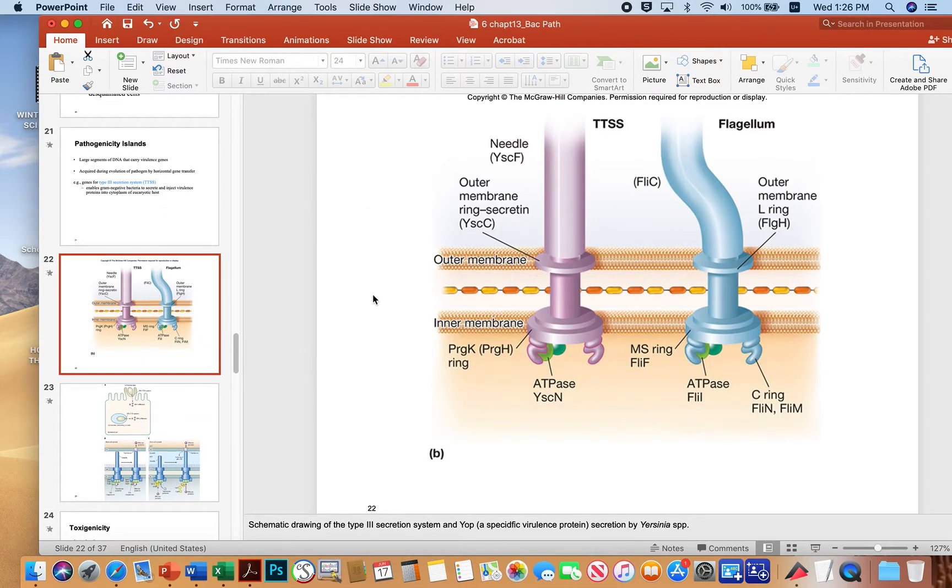The type 3 secretion systems are basically syringes, and they're modeled after flagella. They look very similar to flagella at the level of the amino acid sequence. Here's the needle part right here that would stick into a host cell. And then this motor part right there will take an effector molecule like my pointer dot here and allow it to inject into a susceptible host.